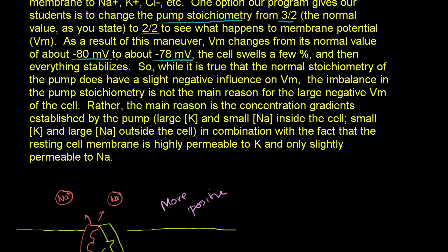So it changes a little bit. The potential difference becomes a little bit less. The cell swells a few percent, and then everything stabilizes. So while it is true that the normal stoichiometry of the pump does have a slight negative influence on the membrane potential, the imbalance in the pump stoichiometry is not the main reason for the large negative membrane potential of the cell.